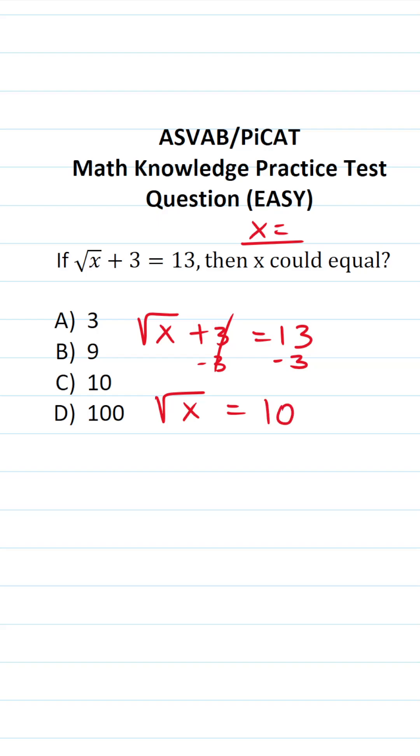Again, we want to know the value of x, not the square root of x. So to clear this square root, we're going to square both sides of this equation.